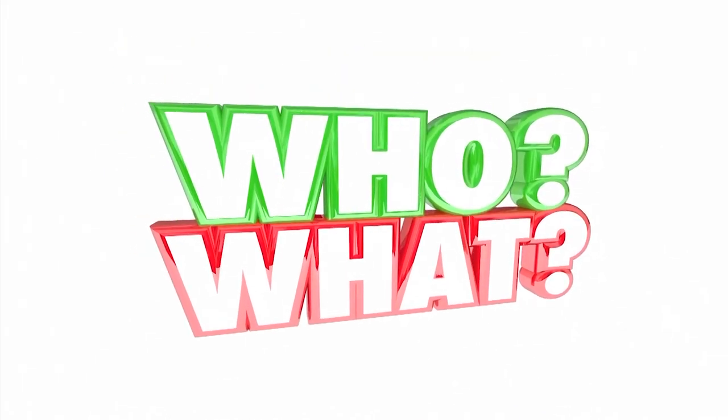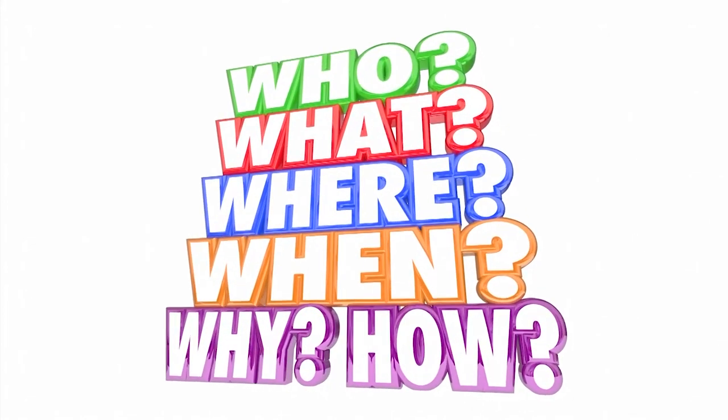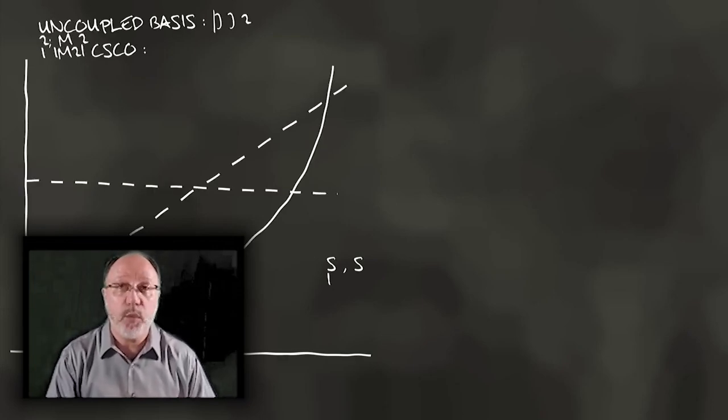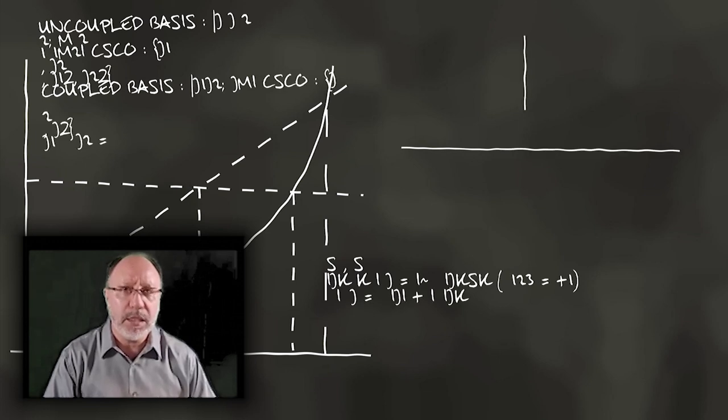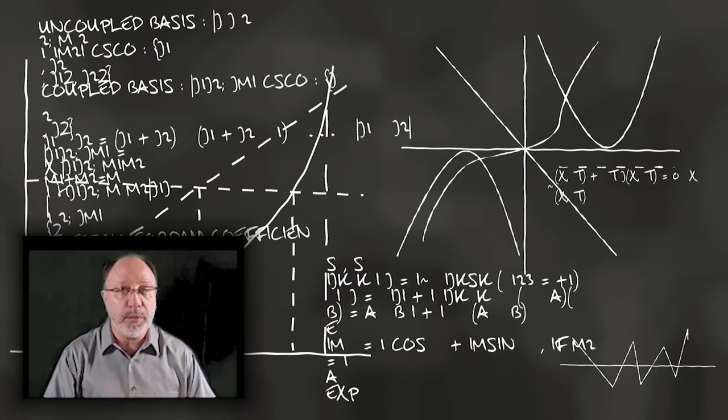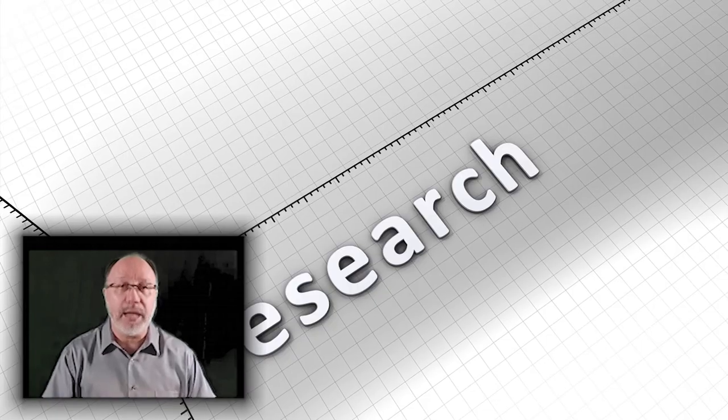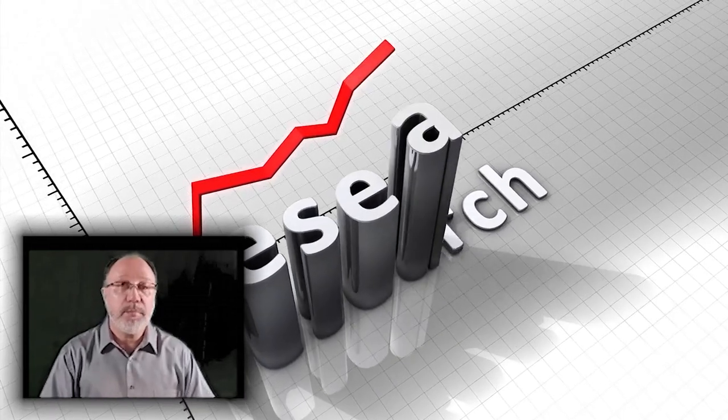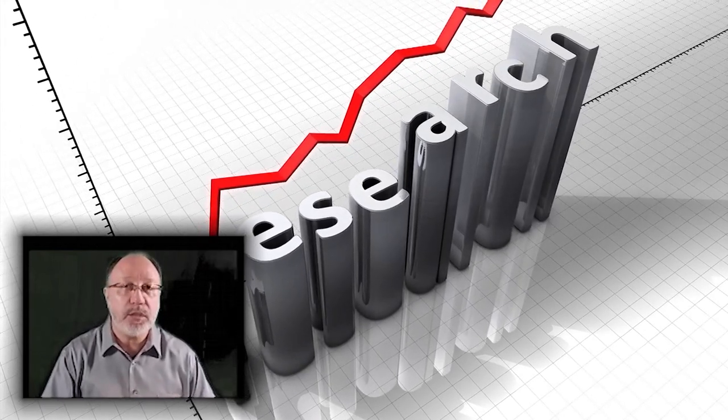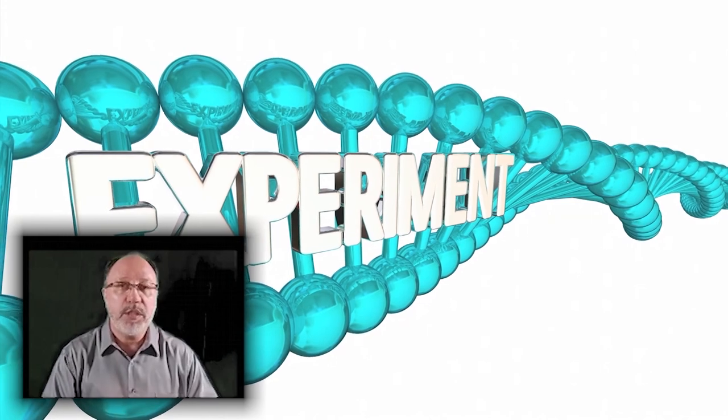The scientific method begins when you ask a question about something that you observe: how, what, when, who, which, why, or where. Do background research. Rather than start from scratch putting together a plan for answering your question, you want to be a savvy scientist using library and internet research to help you find the best way to do things and ensure that you don't repeat mistakes from the past. Construct a hypothesis. A hypothesis is an educated guess about how things work. It is an attempt to answer your question with an explanation that can be tested. A good hypothesis allows you to make a prediction. State both your hypothesis and the resulting prediction you'll be testing. Predictions must be easy to measure.